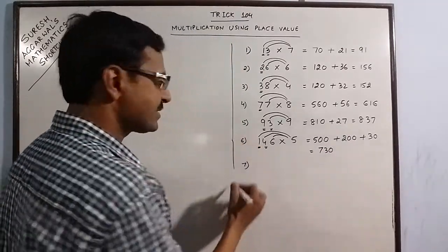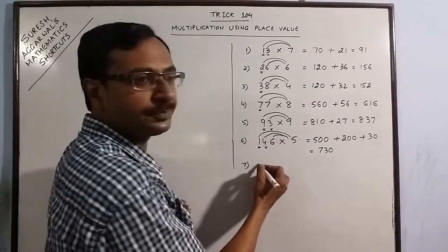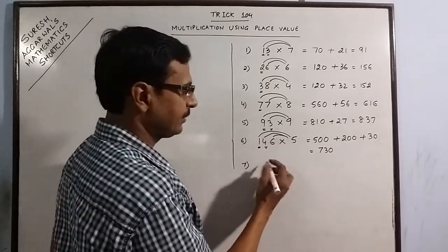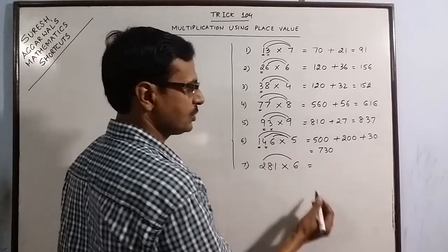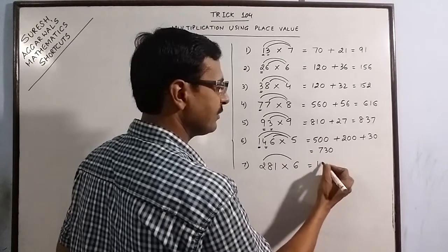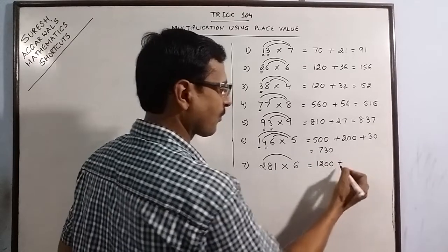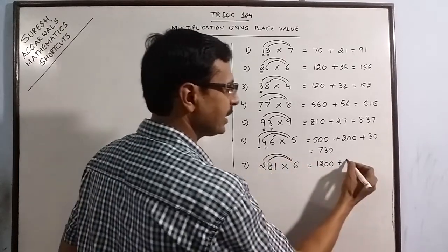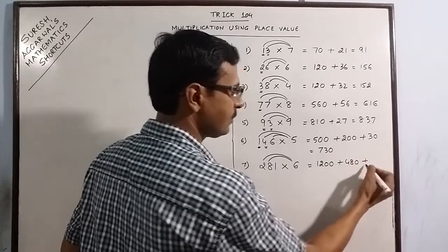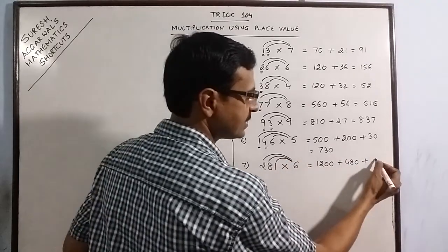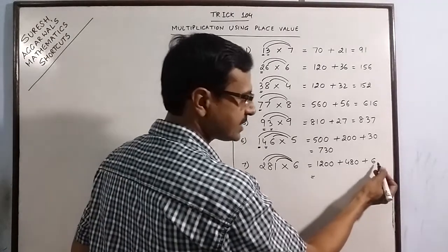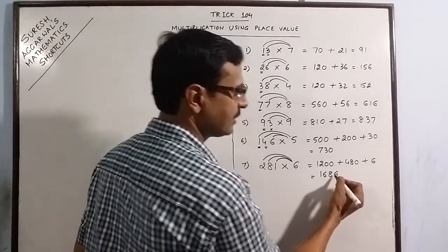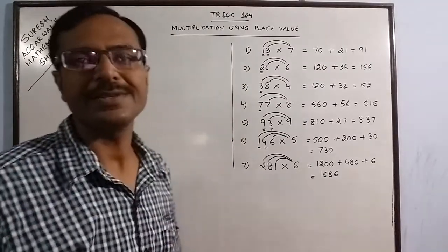Multiply more numbers like this. Say we have 281 to be multiplied by 6. See 2 into 6 is 12, put 2 zeros, 8 into 6 is 48, put 1 zero, 1 into 6 is 6. 1200, 1680, 1686 is the product of 281 and 6.